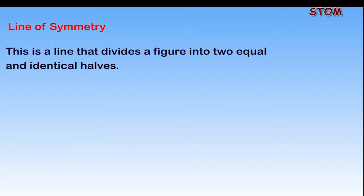Line of Symmetry. This is a line that divides a figure into two equal and identical halves. This red dotted line shows one of the lines of symmetry that divides the square into two identical and equal halves.